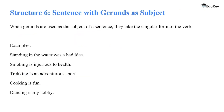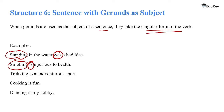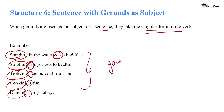Structure 6: sentences with gerunds as subject. When gerunds are used as the subject of a sentence, they take the singular form of the verb. Examples: 'Standing in the car was a bad idea,' 'Smoking is injurious to health,' 'Trekking is an adventurous sport,' 'Cooking is fun,' 'Dancing is my hobby.' With gerunds as the subject, we always use the singular form of the verb.